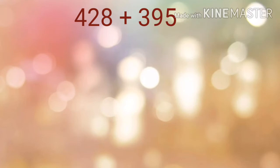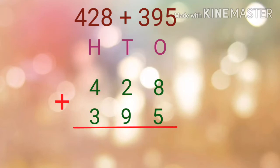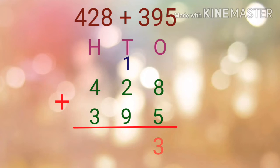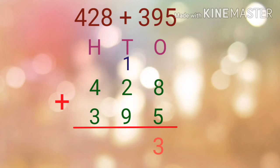Now let us go for another example. Let us add the number 428 and 395. First we will start with the 1's place. The digits are 8 and 5. Add 8 plus 5, that is equal to 13. Regroup the number 13 into 10's and 1's — 3 is written in the 1's place and 1 is carried over to the 10's place. Now add the digits in the 10's place. The digits are 1, 2 and 9. Let us add 9 and 2: 9 plus 2 will give you 11. Then 11 plus 1 gives 12.